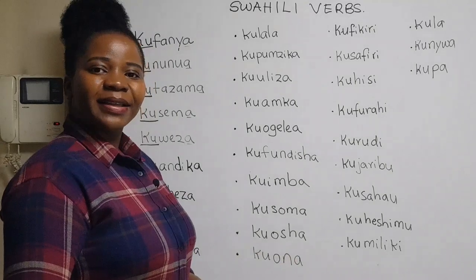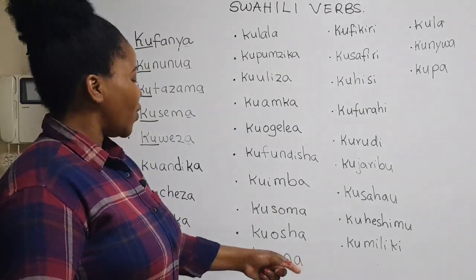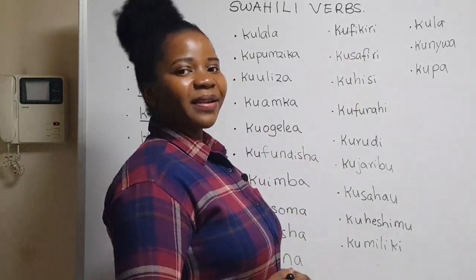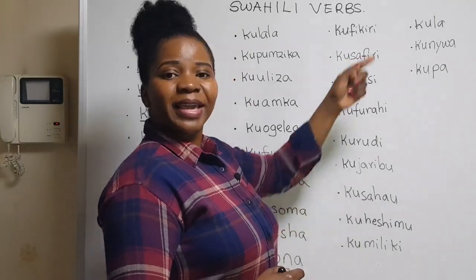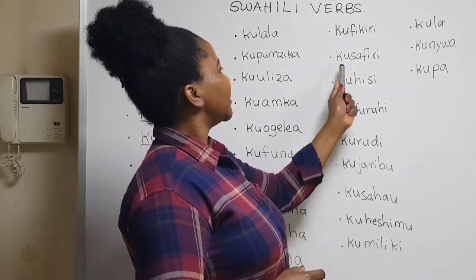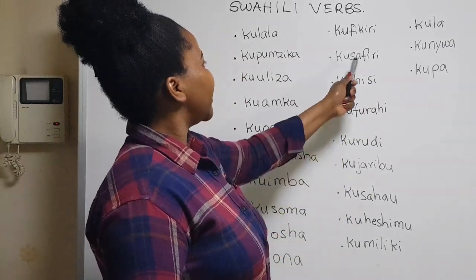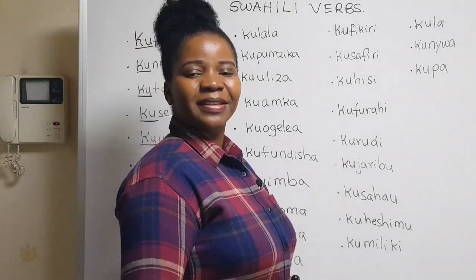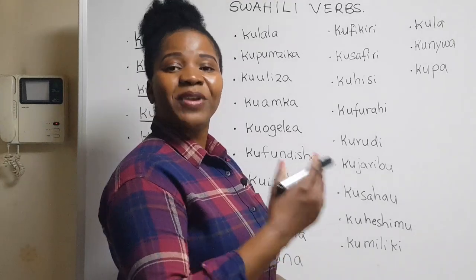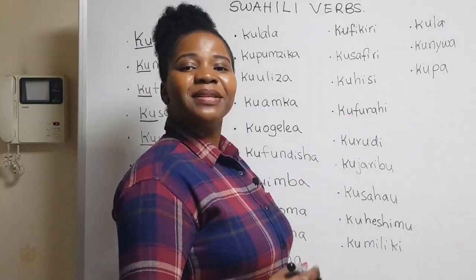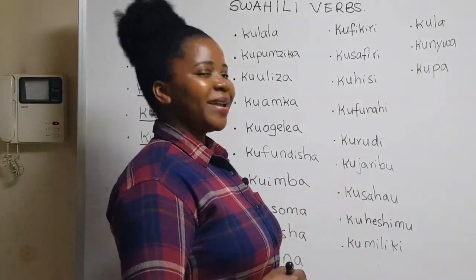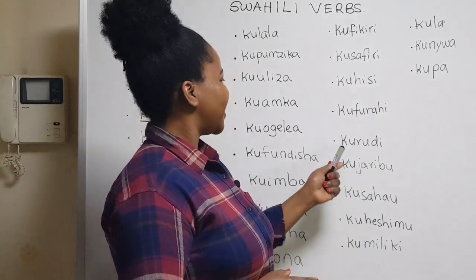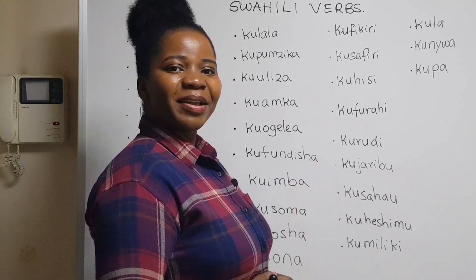'Kuosha' is 'to wash' and 'osha' is 'wash.' 'Kuona' is 'to see' and 'ona' is 'see.' 'Kufikiri' is 'to think' and 'fikiri' means 'think.' 'Kusafiri' is 'to travel.' 'Kuhisi' is 'to feel.' 'Kufurahi' means 'to be happy' and 'furahi' means 'happy.'